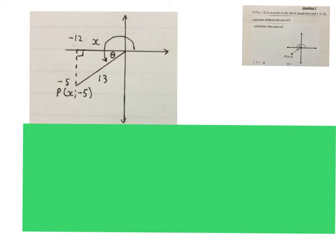What I did now is I redrew this drawing for myself in the third quadrant. I put in my 13, I put in my -5, and then we had to work out x. I already wrote the answer here, but we'll see now how we're going to go about it.